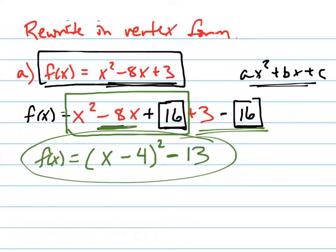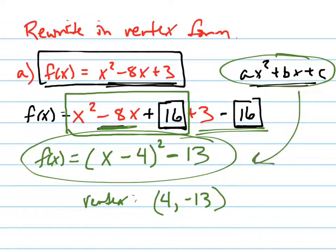There's your vertex form. What's your vertex? 4, negative 13. That's how you go from standard form to vertex form.